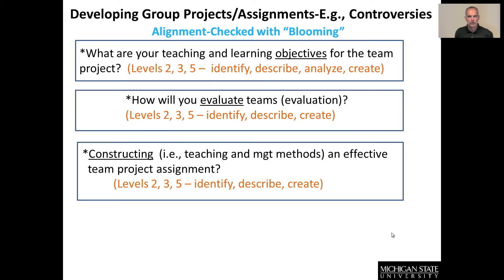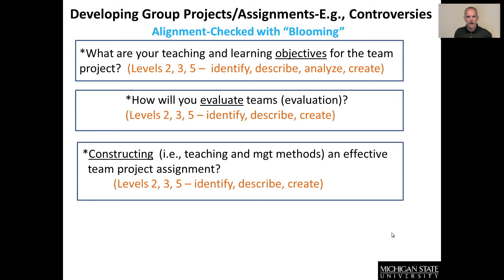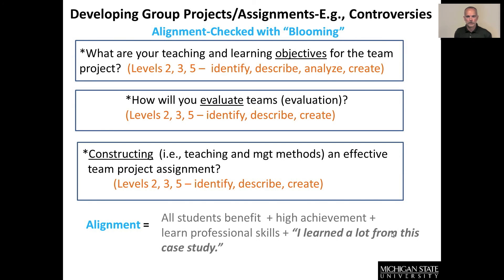If you are in alignment, at the lower levels of your objectives for your case you're asking students to identify, describe, analyze, and create — and similarly, in the evaluation techniques used for individuals or groups, you're asking them to do the same: identify, describe, or create. The level of material you develop for the case or controversy must provide enough information so that it's identifiable and allows students to create materials or describe concepts. If there's alignment in all the materials, students will benefit as individuals and as a group, meet higher-level achievement goals in Bloom's Taxonomy, and hopefully tell you they learned a lot from your case study.